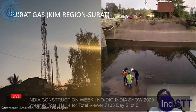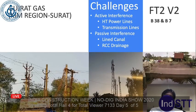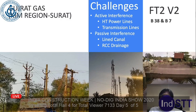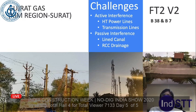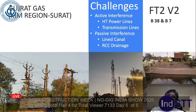Gujarat Gas, Kim Region, Surat — Ambition Industries and PD Project. Once again, active interference: HT power transmission lines, a lined canal, RCC drainage, and a bridge. With all of this, it was easy to complete the job with the Falcon F2 transmitter — our latest Falcon F2 — using band 38 and band 7. Band 7 was used to go through the passive interference of the blind canal, whereas band 38 was used to take care of active interference.